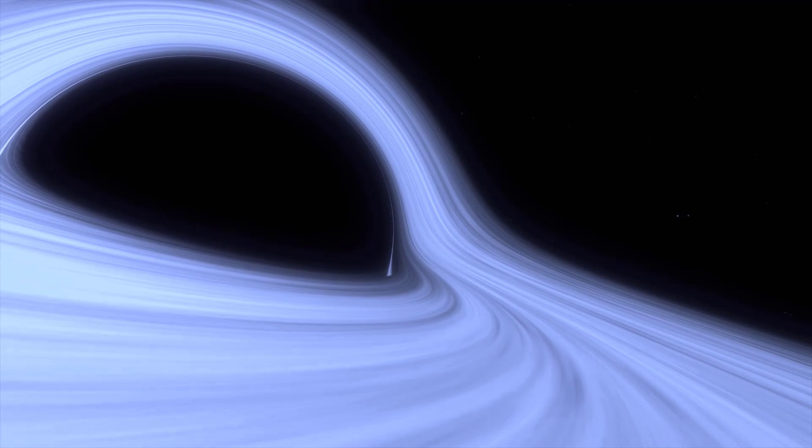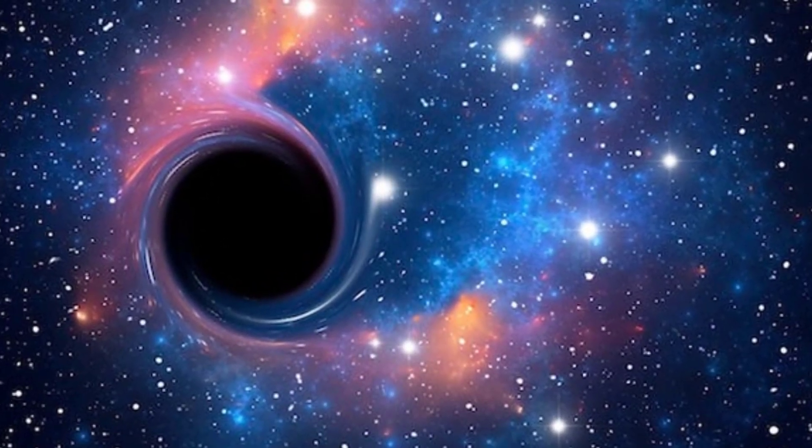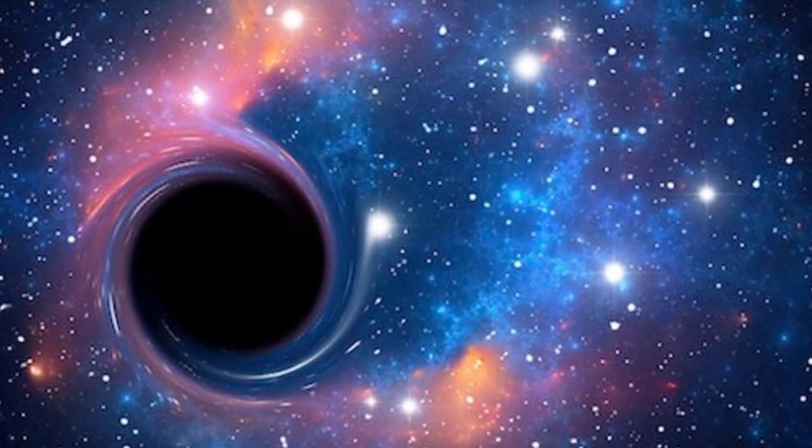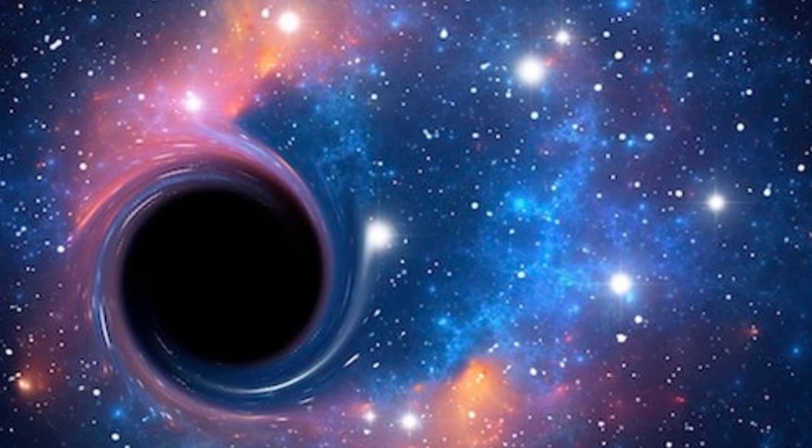A black hole is a region of space-time where gravity is so strong that not even light can escape. Supermassive black holes can even have stars orbiting them with the fastest recorded star moving at 8% the speed of light.